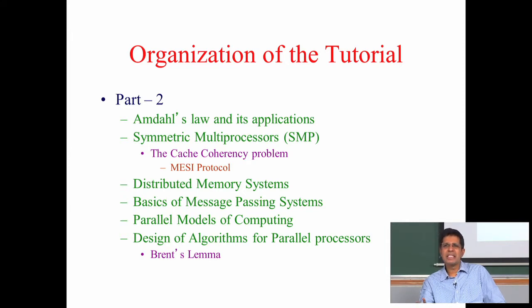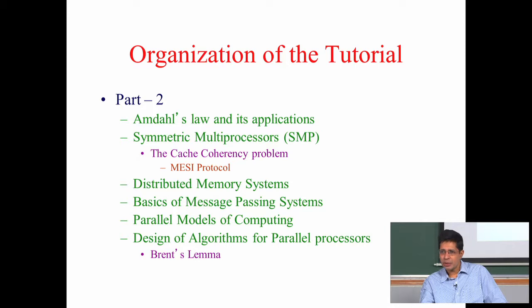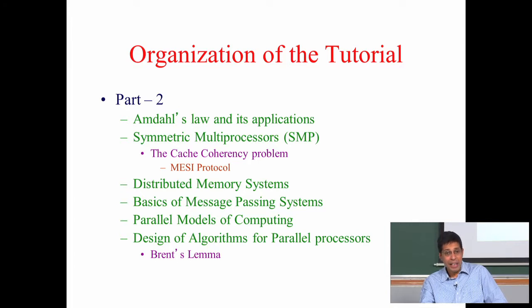What is the challenge in building a multi-core? The biggest problem we will see is something called the cache coherency problem — I mentioned this in the third semester course and I will repeat it here. Then we will look at distributed memory systems and message passing systems.